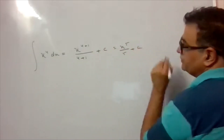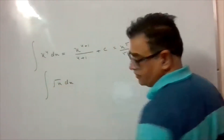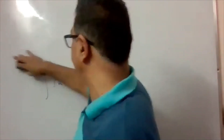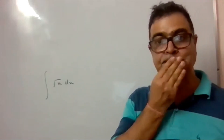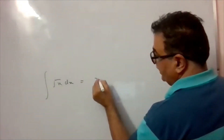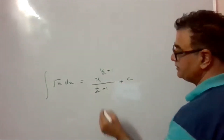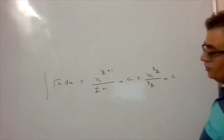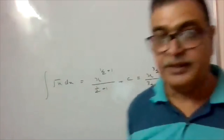Next question: integrate √x dx. Writing √x as x^(1/2), using the formula: x^(1/2 + 1)/(1/2 + 1) + C = x^(3/2)/(3/2) + C = (2/3)x^(3/2) + C.